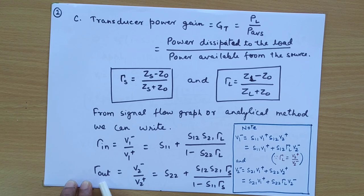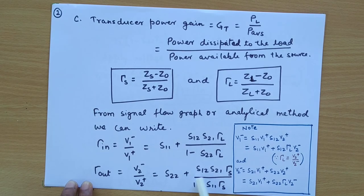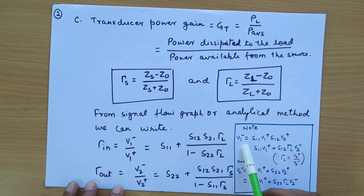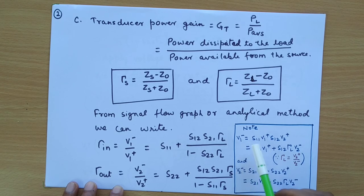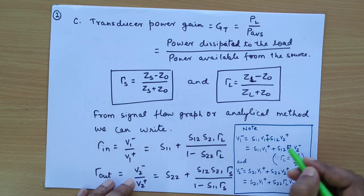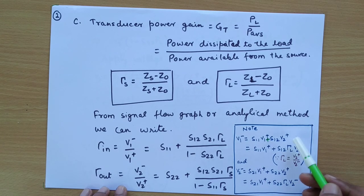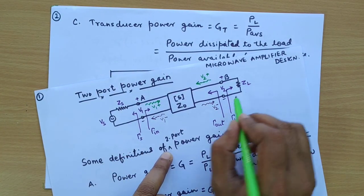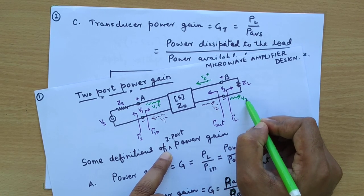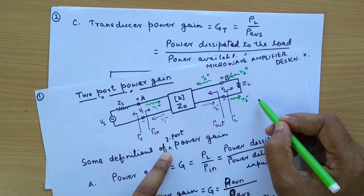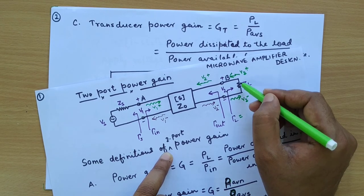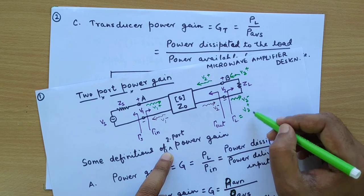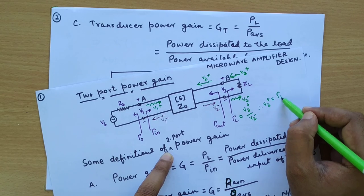We can find the output reflection coefficient gamma_out as V2 minus divided by V2 plus, which equals S22 plus S12·S21·gamma_S divided by (1 minus S11·gamma_S). From the S-parameters definition, V1 minus equals S11·V1 plus plus S12·V2 plus. V2 plus can be replaced by gamma_L times V2 minus, because gamma_L equals V2 plus divided by V2 minus — meaning V2 plus is the reflected wave and V2 minus is the incident wave at the load. So we can write V2 plus equals gamma_L times V2 minus.